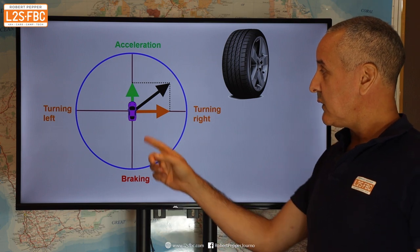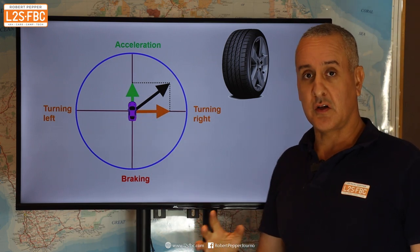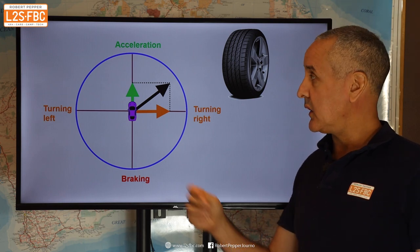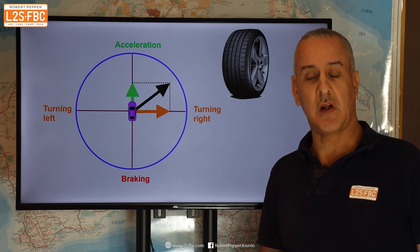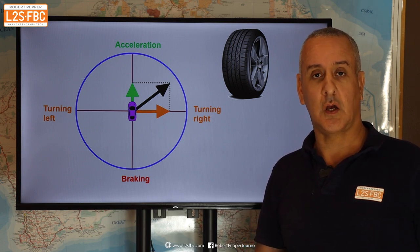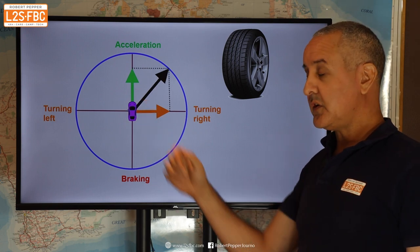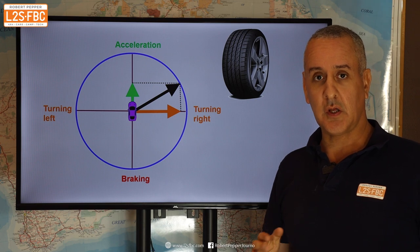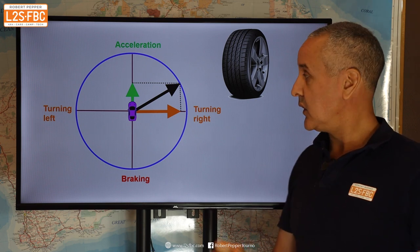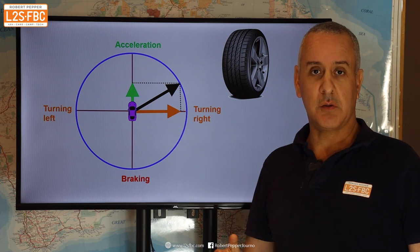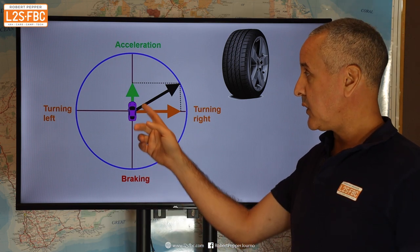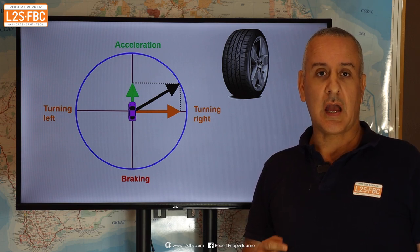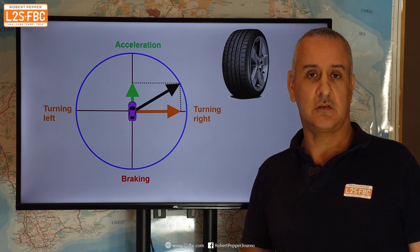Here's another example. We've got a certain amount of acceleration and a certain amount of turning right — using some grip for accelerating and some for turning — but you can see that the resolved black arrow is not touching the edge of the circle. That means we've got some grip we can still use; we're not driving to the limit. We can increase acceleration to use all available grip, or we can leave acceleration where it is and increase the turning demand, making a tighter turn radius.